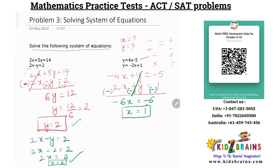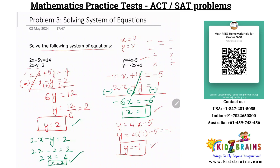Now substitute x equals 1 back into the original equation. So y is equal to 4x minus 5. Therefore y is equal to 4 into 1, which is 4, minus 5. So y is minus 1. We have found the solution for x and y for the second equation: x equals 1 and y equals minus 1.